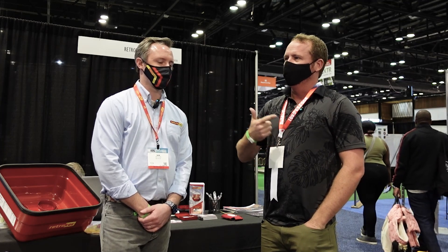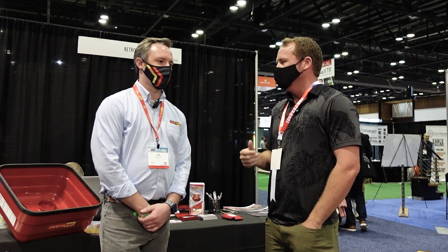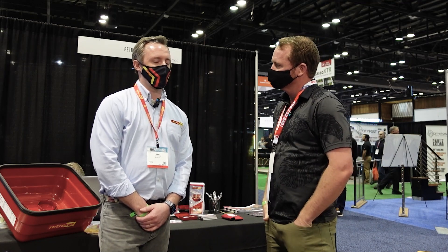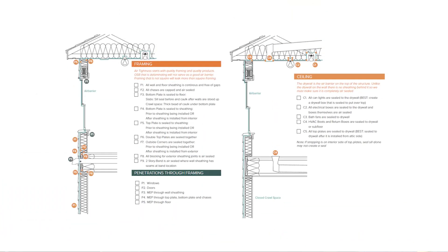A lot of technicians focus on the ductwork. They think about getting the ducts the right size, maybe even total system airflow if they're really being thoughtful. But maybe they don't think about the envelope as a whole. When we're looking at the big picture, the building envelope is a part of the HVAC system — it contains all of the conditioned air that we're working to get to a certain temperature or certain humidity. So that's the container for all of that.